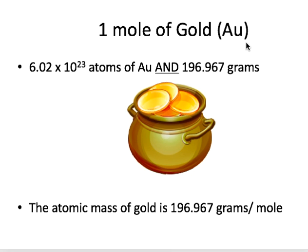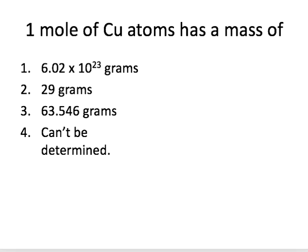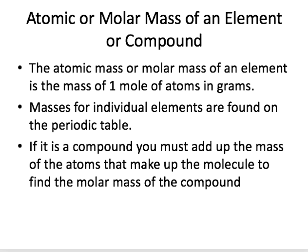If you look up gold on the periodic table — symbol AU — gold is a massively big atom compared to carbon. So even with 6.02 times 10 to the 23rd atoms of gold, because they're so much bigger, you'd have to weigh out almost 200 grams. The atomic or molar mass of an element is the mass of one mole of atoms in grams, and masses of individual elements are found on the periodic table.